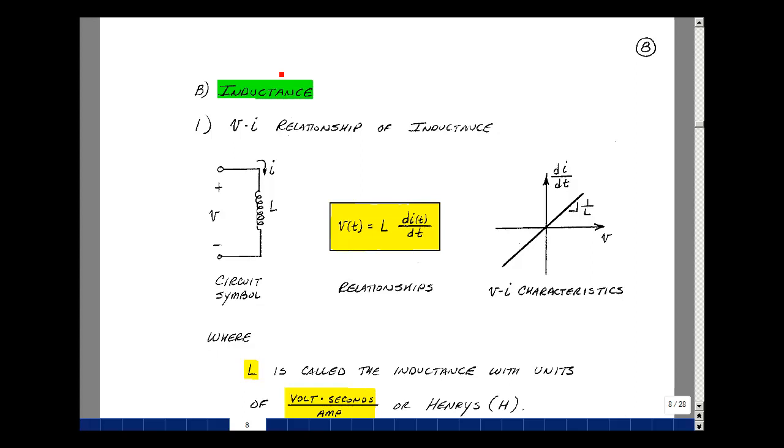Our last circuit element is called inductance. The symbol for it is a squiggly line, and I'll apply a voltage across it and a current through it such that it absorbs power. If I do that, then the relationship between voltage and current is that the voltage is equal to the derivative of the current with respect to time times a scalar. I'm going to call that scalar inductance.